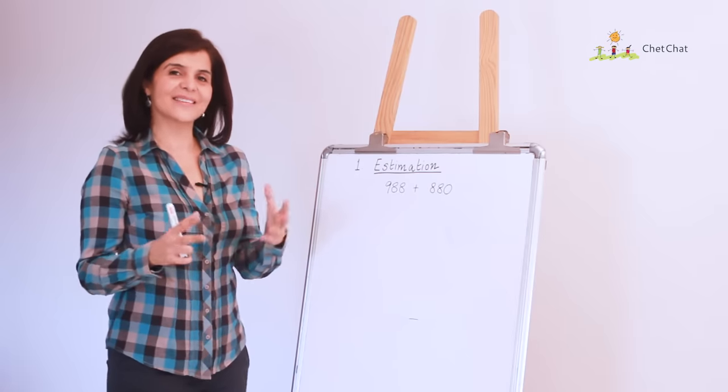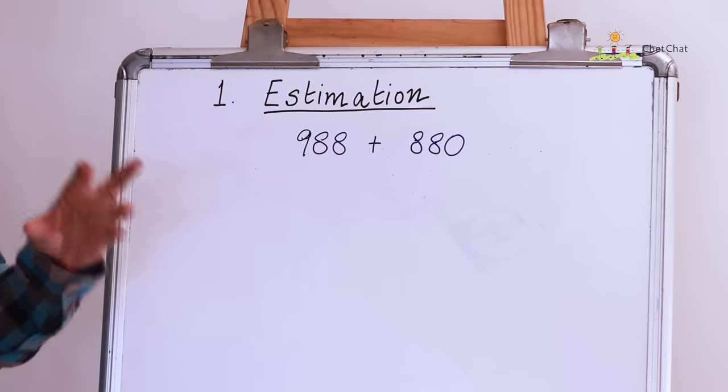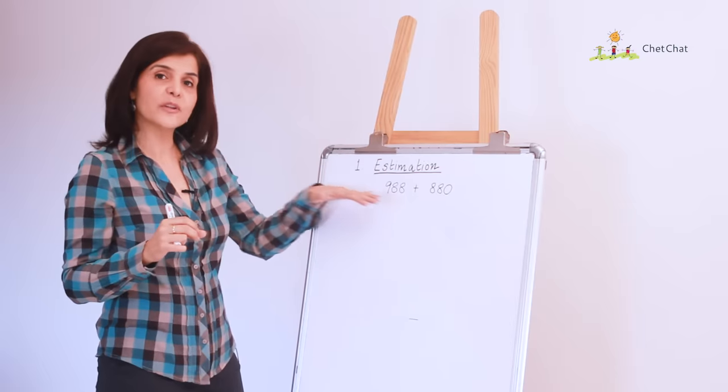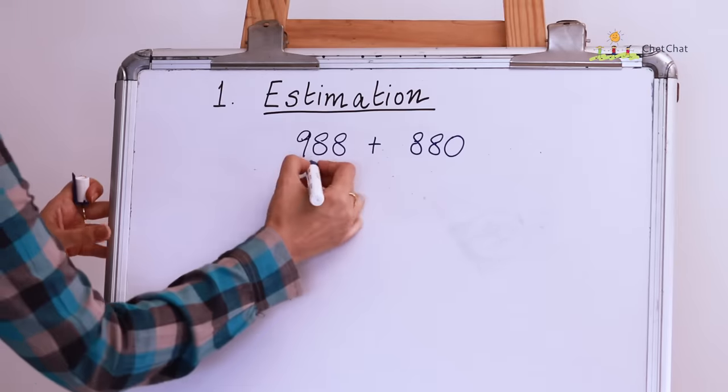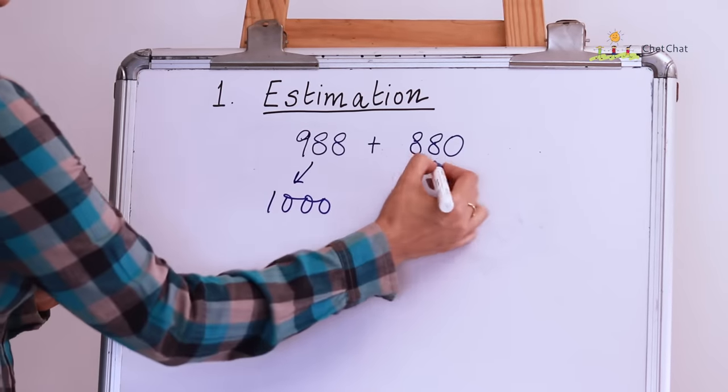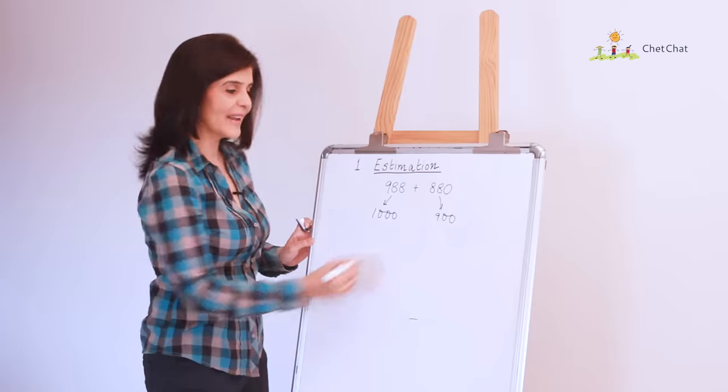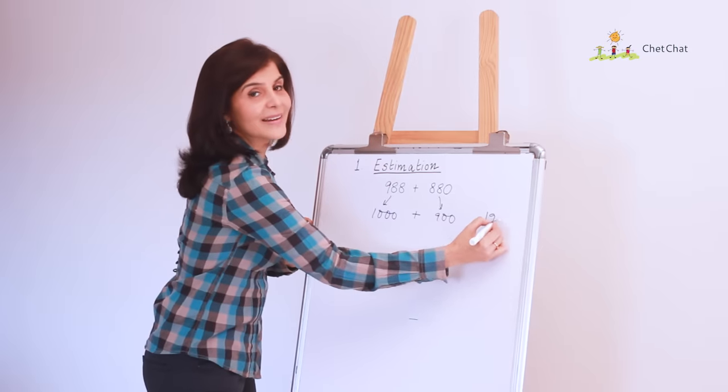Okay, let's try another exercise in estimation. Now, before you start adding all these big numbers, let's try to take them to the nearest 100. So, I would take 988 up to 1000 and I would take 880 up to 900 and I would add them up and I would get 1900.